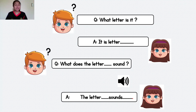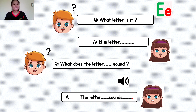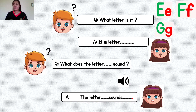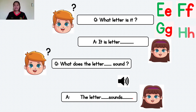Now, let's answer the question. Answer together. What letter is it? It is letter E. What does the letter E sound? The letter E sounds E. Right? The letter E sounds E. Very good. What letter is it? It is letter F. Very good. What letter is it? It is letter G. What letter is it? It is letter H. Very good.